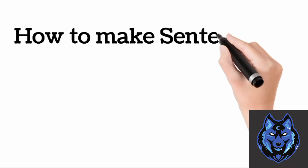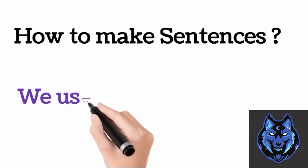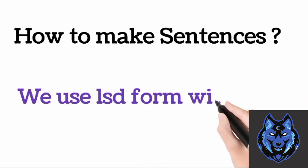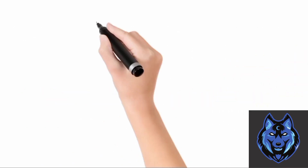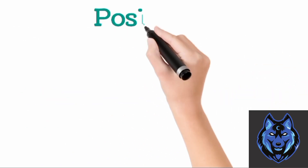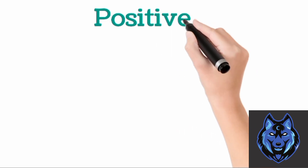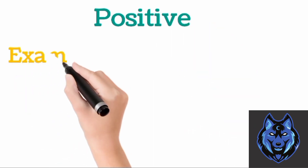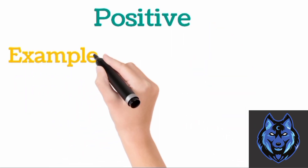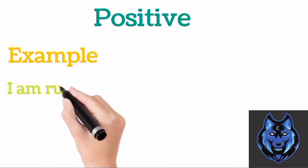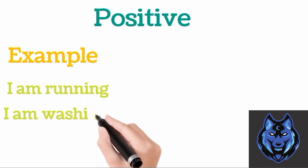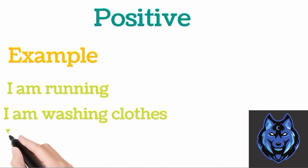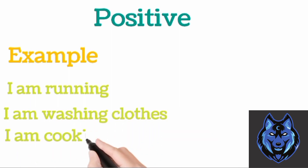How to make sentences: we use the verb's form with -ing for positive sentences. For example, I am running. I am washing clothes. I am cooking food.